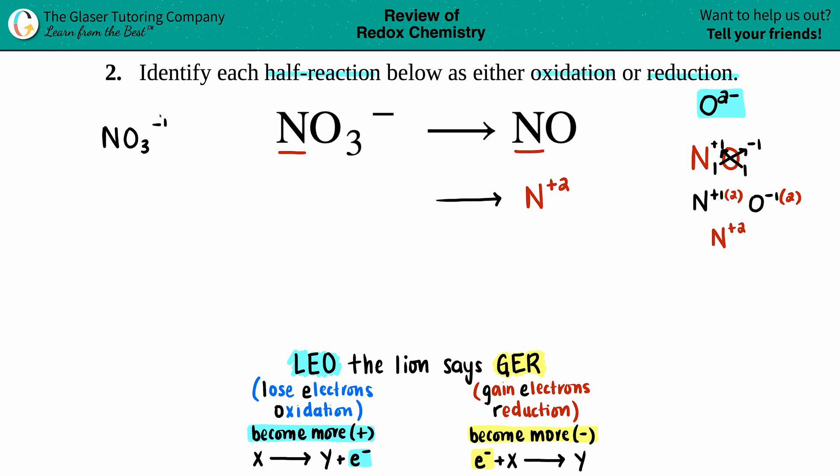Now this one is a little different because you have an overall charge. In this case we already know what the oxygen is going to be—the oxygen is going to be a negative two charge—but we don't know what that nitrogen is, so maybe we'll just label it as X.